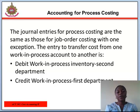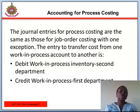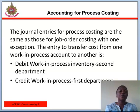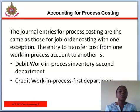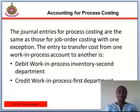Accounting for process costing. The journal entries for process costing are the same as those for job or other costing, with one exception. The entry to transfer costs from one work-in-progress account to another is: debit work-in-progress inventory (second department), credit work-in-progress (first department).